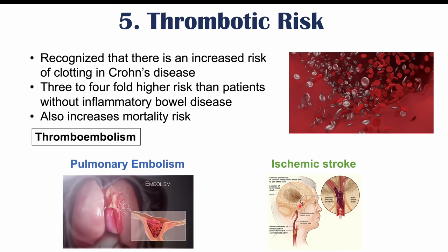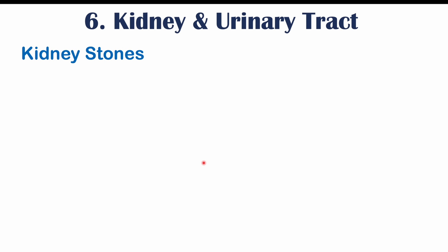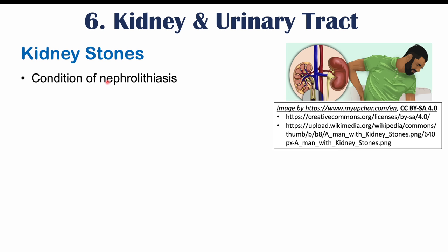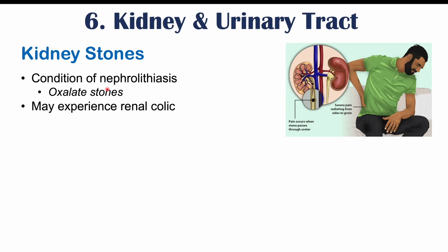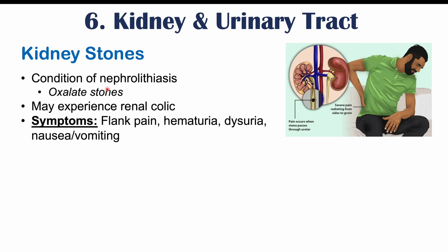Crohn's disease patients can also have issues with kidney and urinary tract functioning. They are at higher risk of kidney stones — nephrolithiasis — and are more likely to develop oxalate stone formation. This can lead to renal colic, which involves flank pain, hematuria (blood in the urine), dysuria (burning sensation when urinating), and nausea and vomiting.